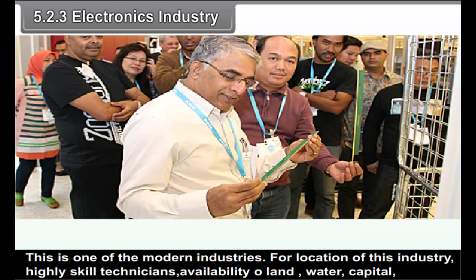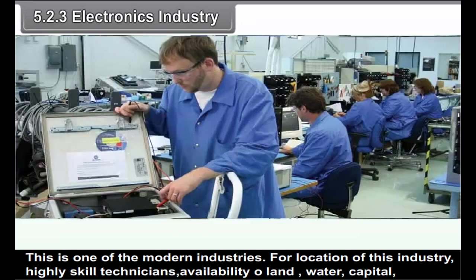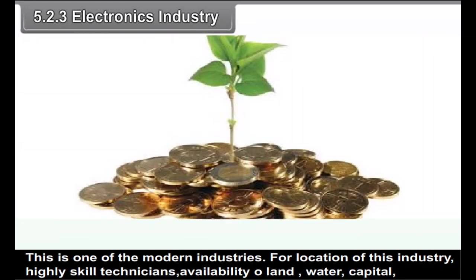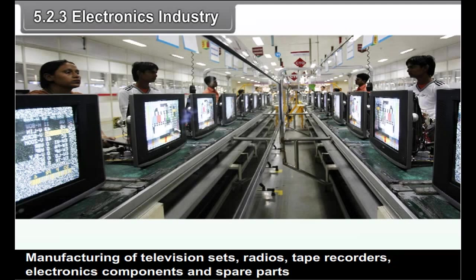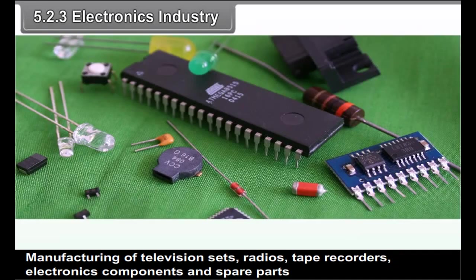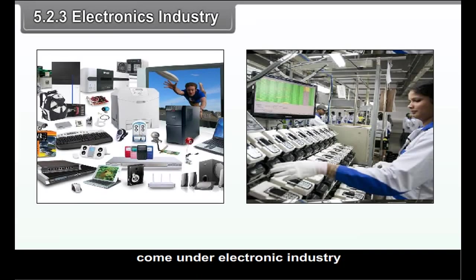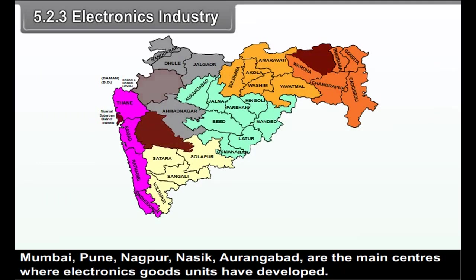Electronics industry is one of the modern industries. For location of this industry, highly skilled technicians, availability of land, water, capital, energy and latest technology are the prerequisites. Manufacturing of television sets, radios, tape recorders, electronic components and spare parts come under electronic industry. Mumbai, Pune, Nagpur, Nasik and Aurangabad are the main centres where electronics goods units have developed.